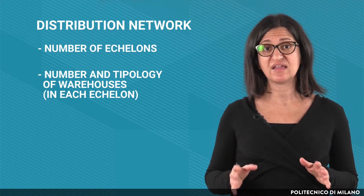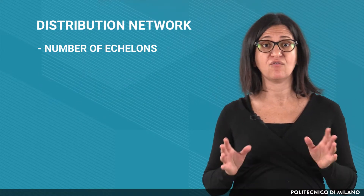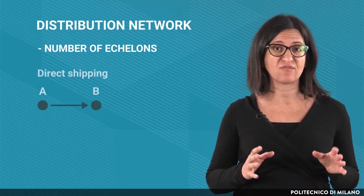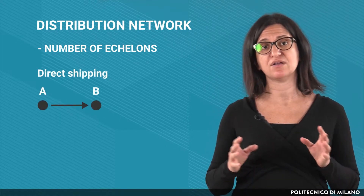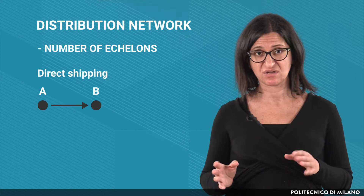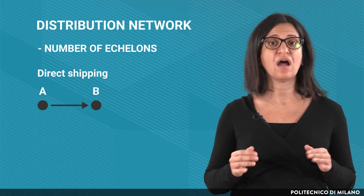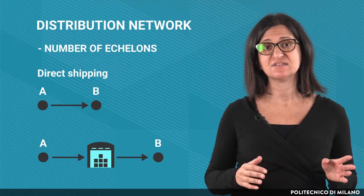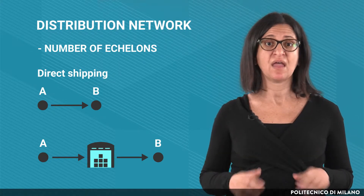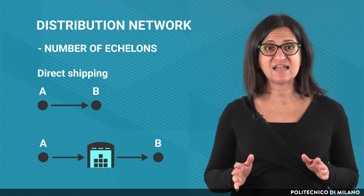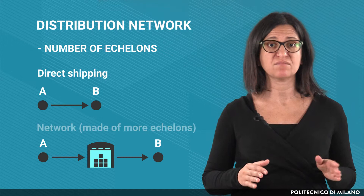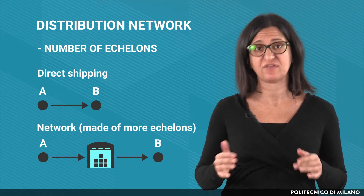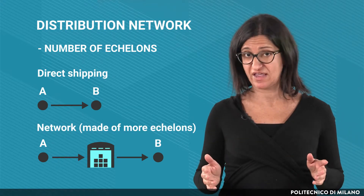Let's start by considering the number of echelons. There can be direct shipping from the points of origin to the points of destination, but more frequently warehouses may be located between them. In this case, we can have a distribution network made of one echelon, two echelons, or three or even more echelons.